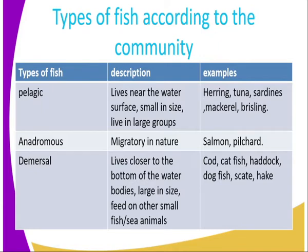We can also classify fish according to their community, and according to community we get three classes. There is the pelagic, there is the anadromous, and there is the demersal fish.